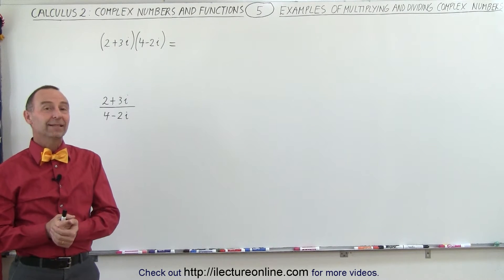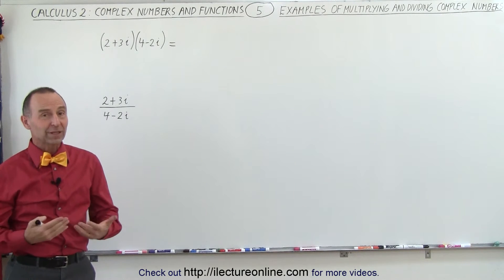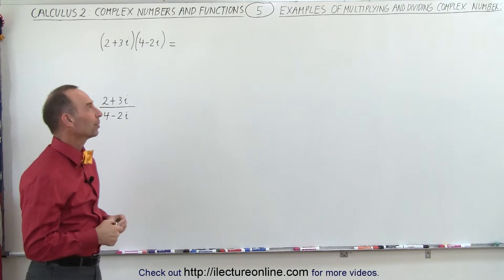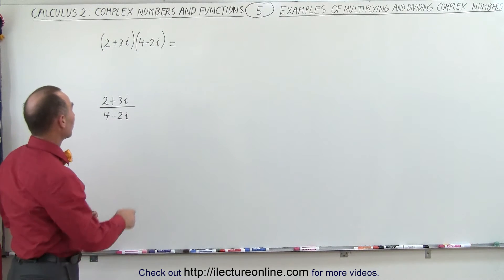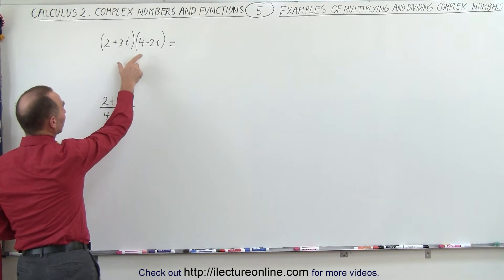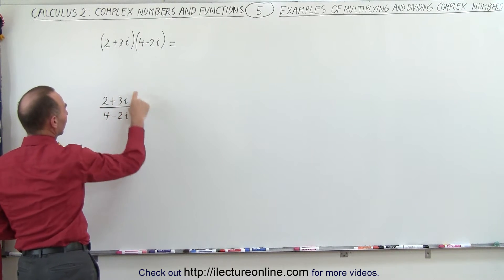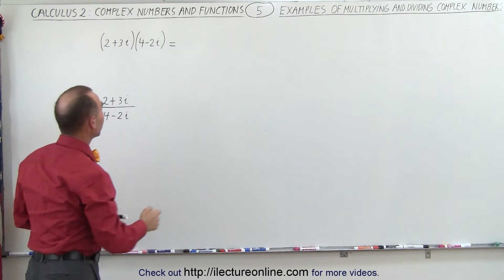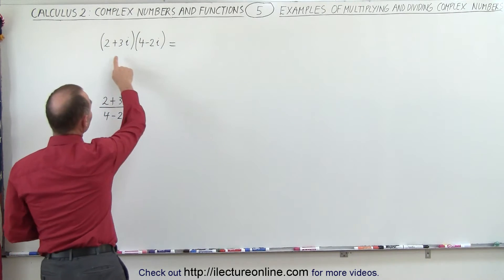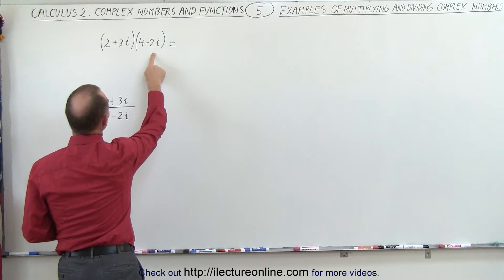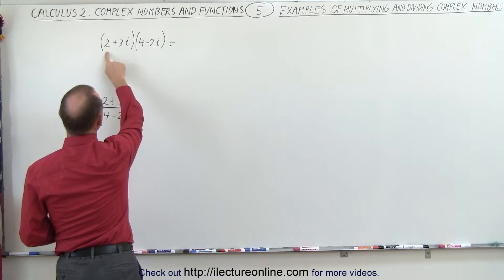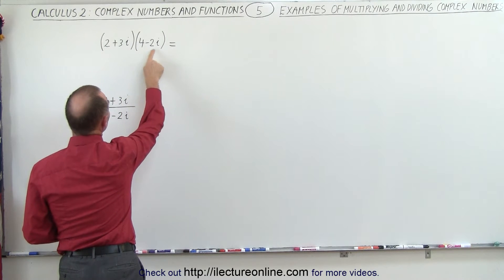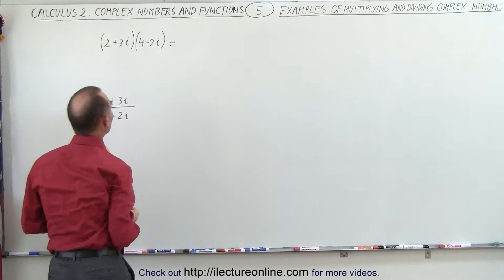Welcome to ElectronLine. Now let's do some real examples of how to multiply and divide complex numbers. Notice that they're the same two numbers that we're either going to multiply or divide. Here again, it's like multiplying two binomials together. We take each of the two terms of the first and multiply it times each of the two terms of the second.